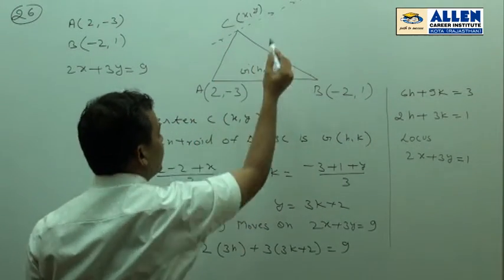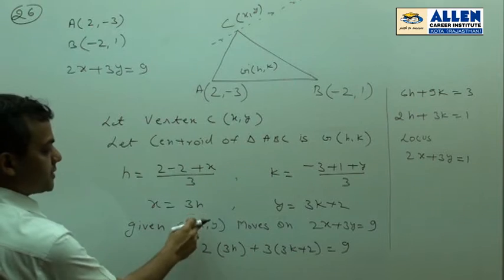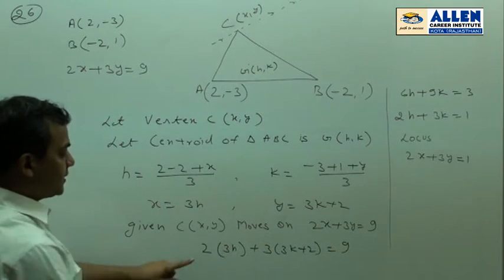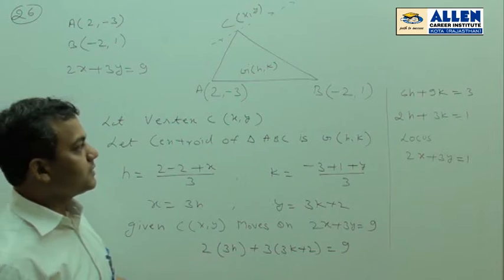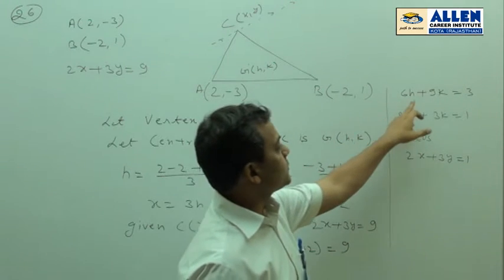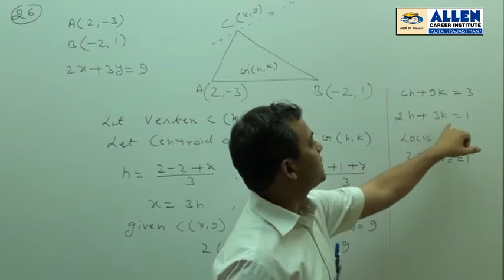As given that C is moving on this line, so putting the coordinates of C in this equation: 2 times 3h plus 3 times (3k plus 2) equal to 9. When we solve this equation, we get 6h plus 9k equal to 3, that is 2h plus 3k equal to 1.